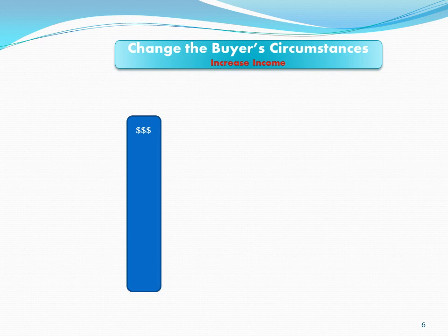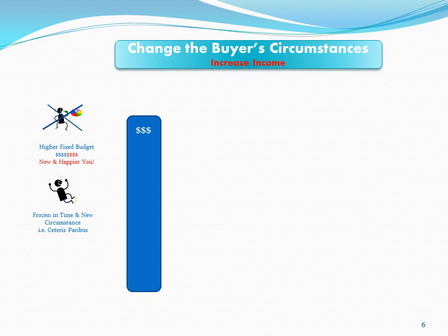We can depict that new buyer in our model. The old you is gone; a new you is here with a higher budget. The model allows us to categorize and analyze almost any factor that would influence a buyer. In this case, I've increased income — basically redesigned the buyer by giving them more purchasing power — and now I want to see how they're going to behave.